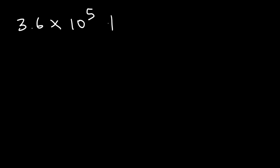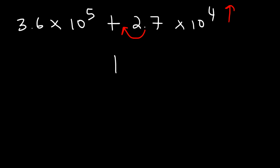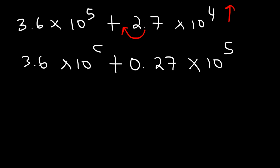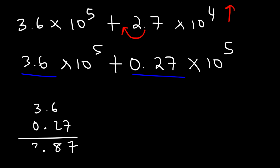Let's try another example: 3.6 times 10 to the 5 plus 2.7 times 10 to the 4. I'll convert the smaller exponent to the larger one by moving the decimal one unit to the left, decreasing 2.7 to 0.27 and increasing the exponent to 5. So this becomes 0.27 times 10 to the 5. Now I can add: 3.6 plus 0.27 equals 3.87 times 10 to the 5.